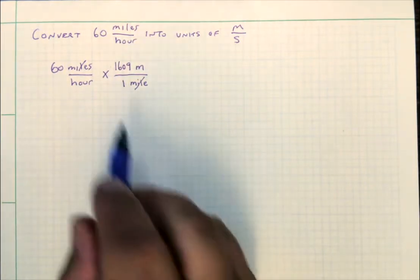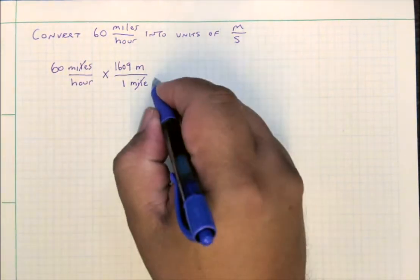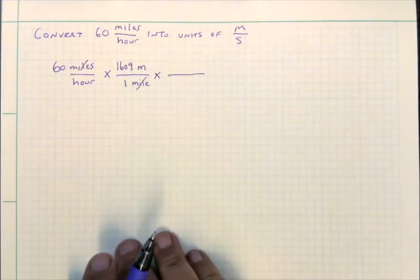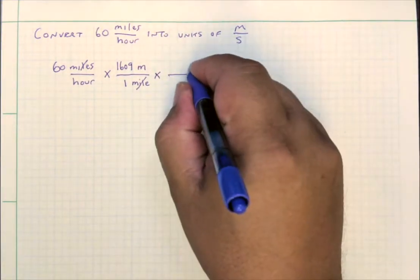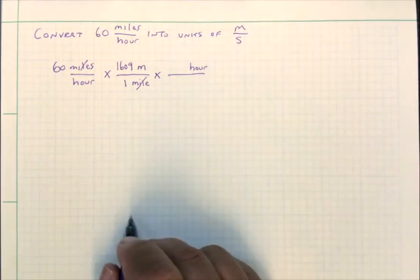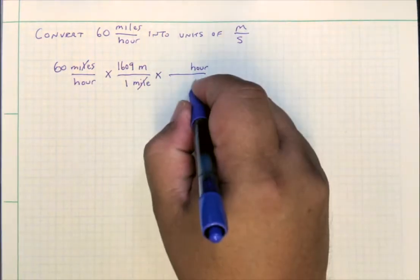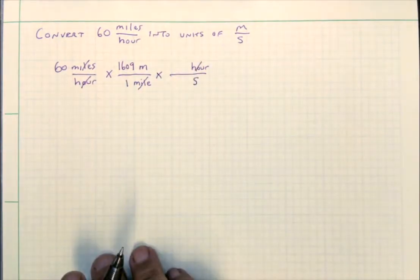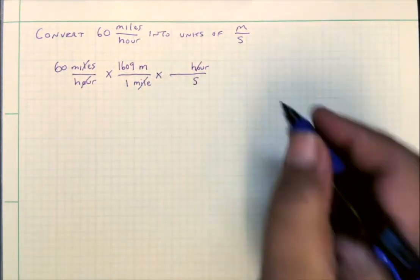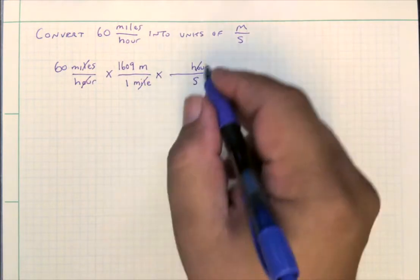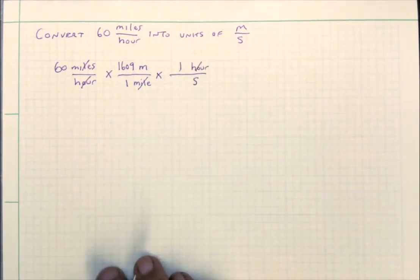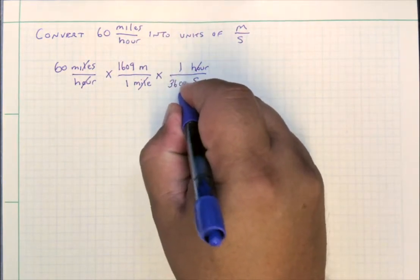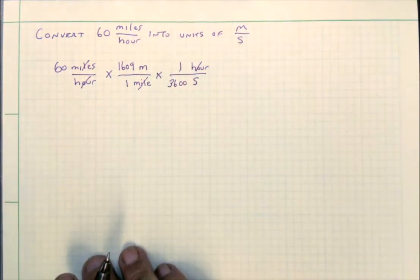We're not quite done yet, because we have to get rid of the units of hours and replace them with seconds. So we write another times symbol and another long division symbol. This time, we put hours on top of the fraction and seconds on the bottom, so that hours will cancel and leave us with seconds. The hour is the larger unit, so we put a one next to the hour, and there are 3,600 seconds in one hour.